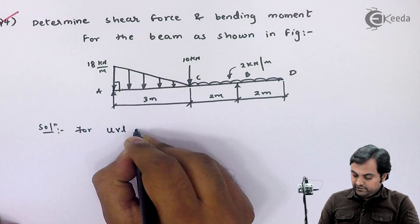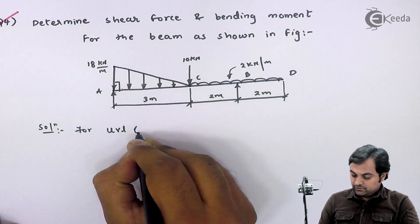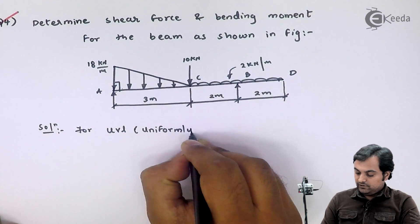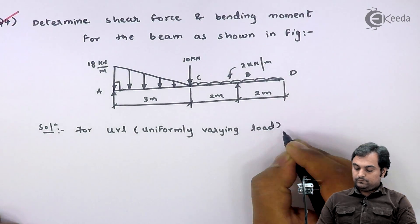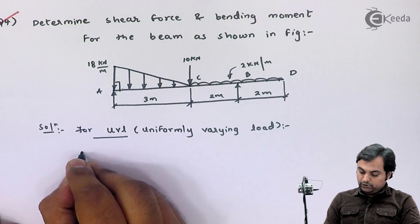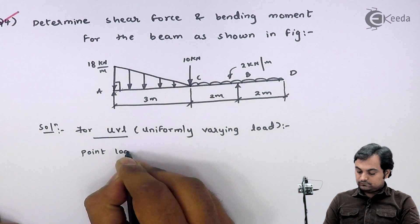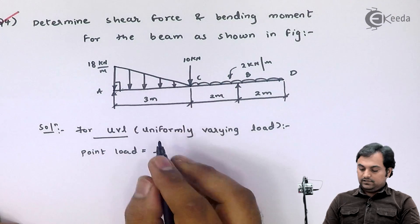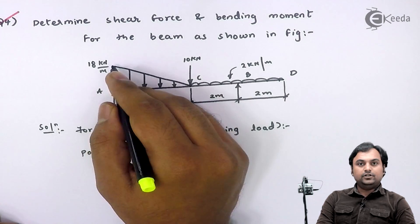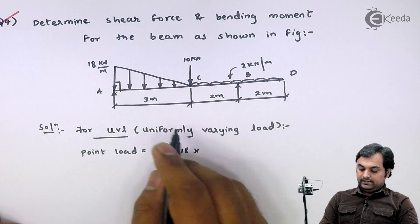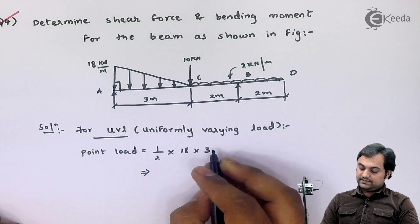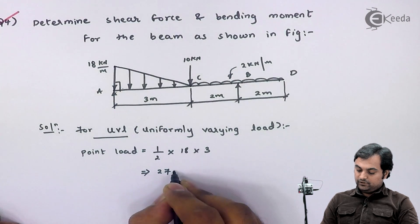UVL stands for uniformly varying load. I will be converting this UVL into a point load. The point load equals half times base times height — since it is a right-angle triangle. If I consider 18 kilonewton per meter as the height and 3 meters as the base, the answer comes out to be 27 kilonewton.